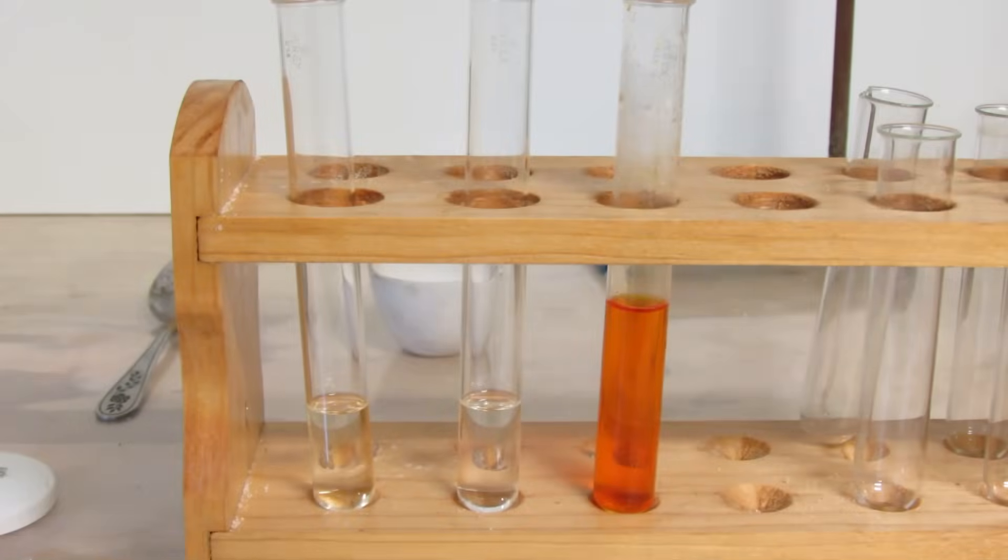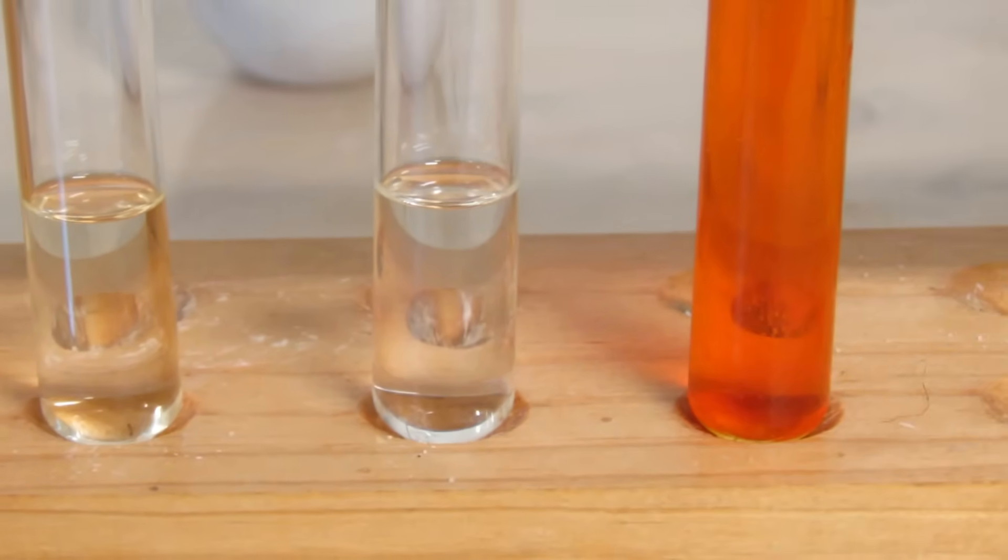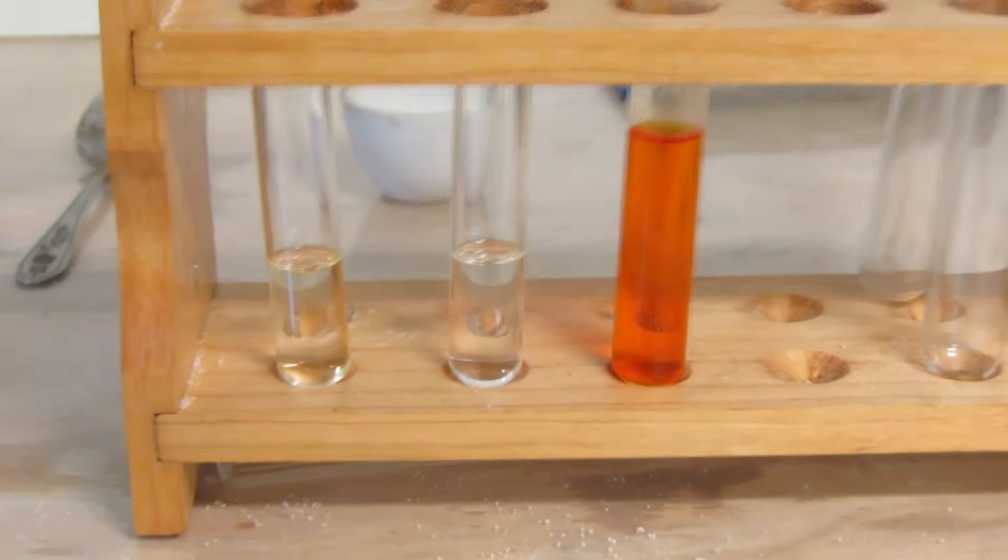Here I have three test tubes. On the left, I have an alkane molecule. In the middle, I have an alkene molecule. And on the right, I have a fairly concentrated bromine water solution.